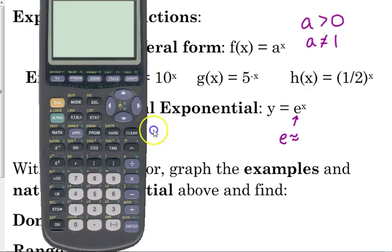It's 2.7 something. If you press second and the division symbol on your calculator, there is E. That's just plain E. 2.718 is usually what people round it to. So it actually does have a value.